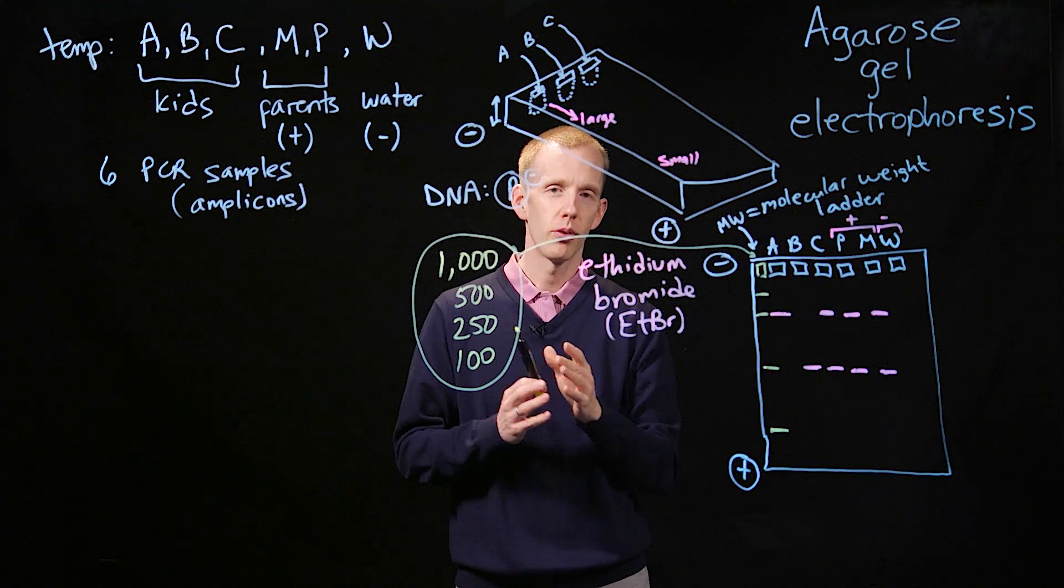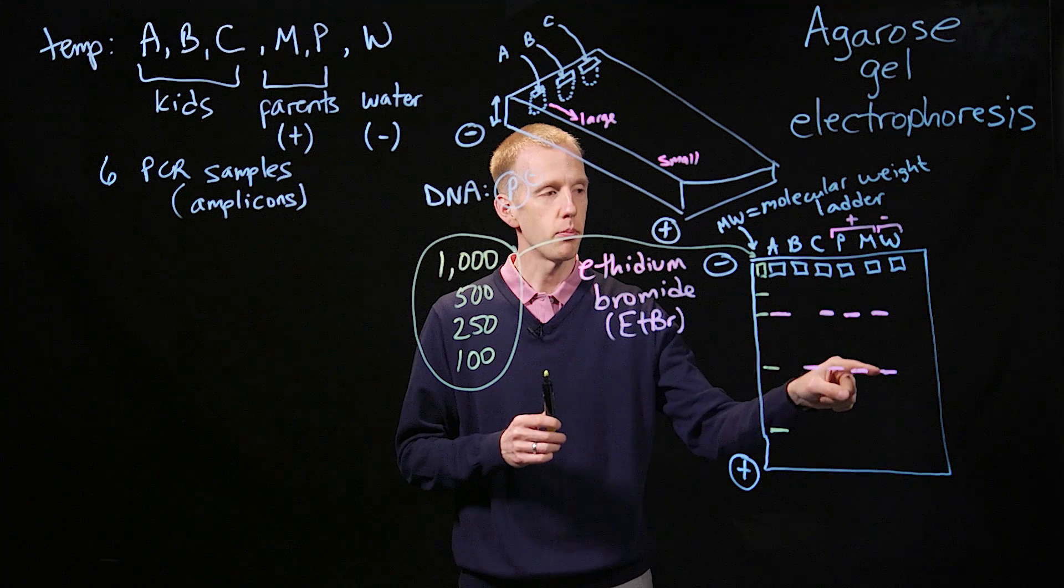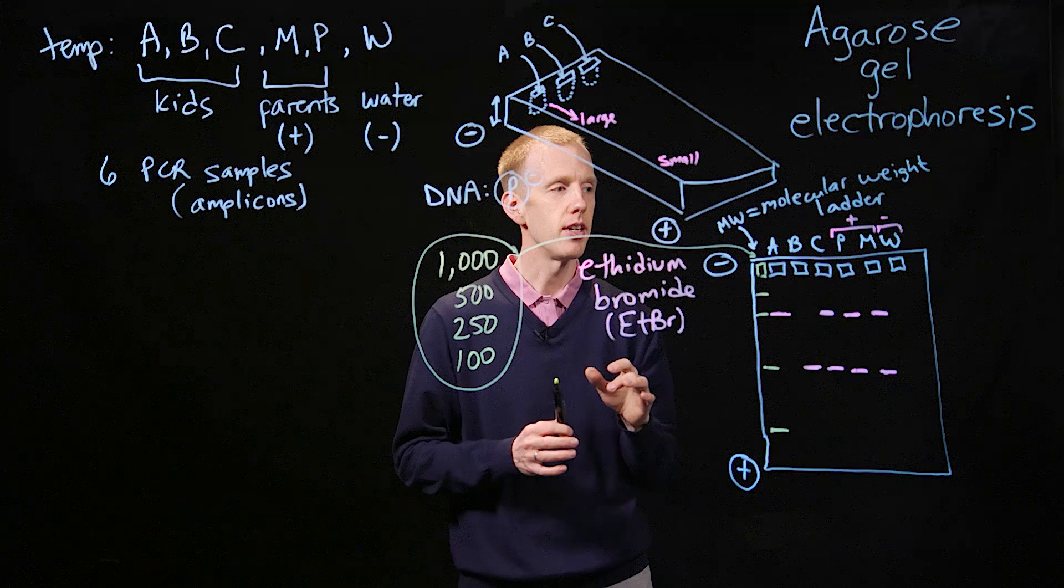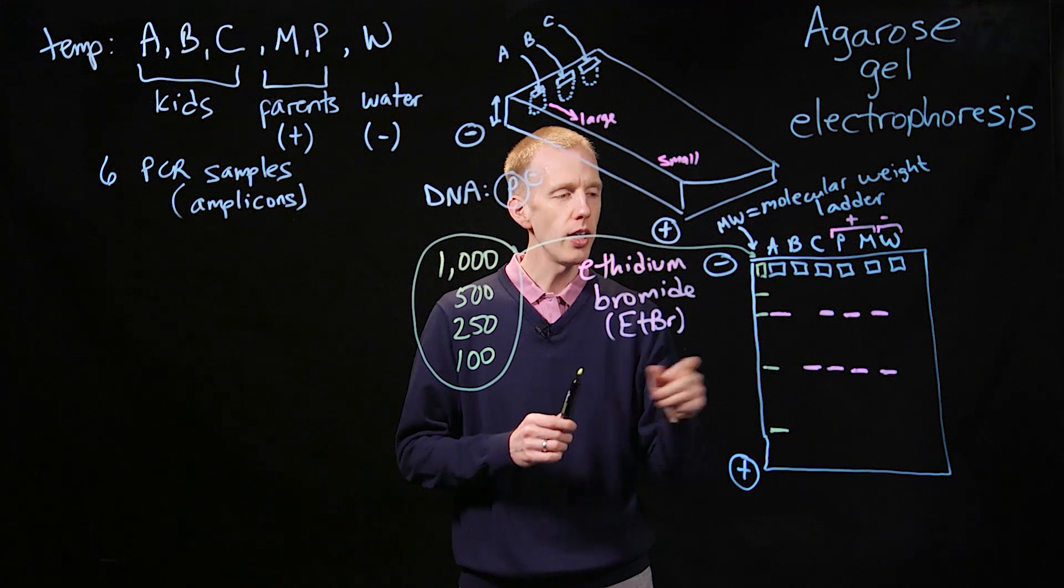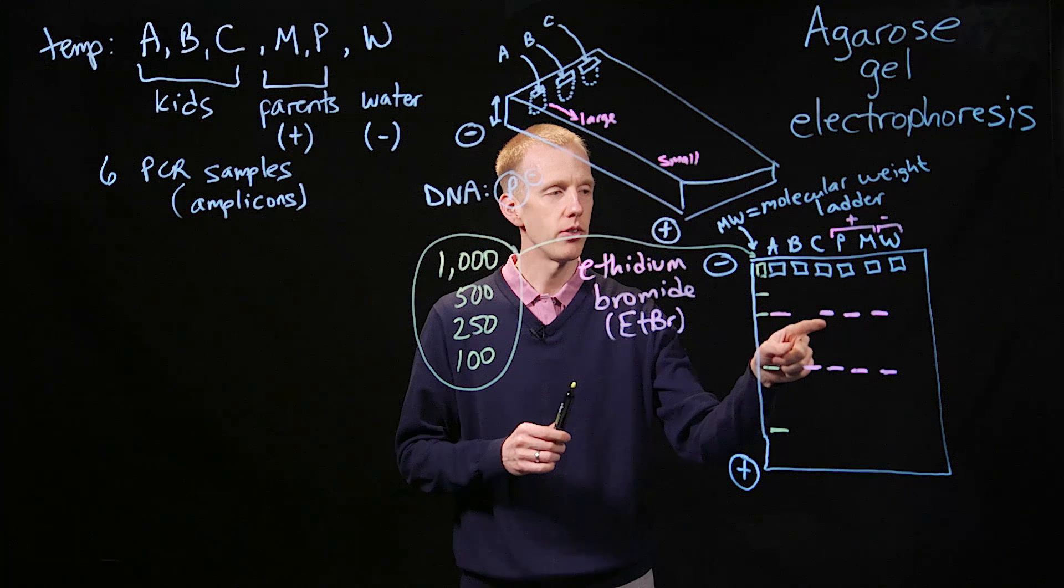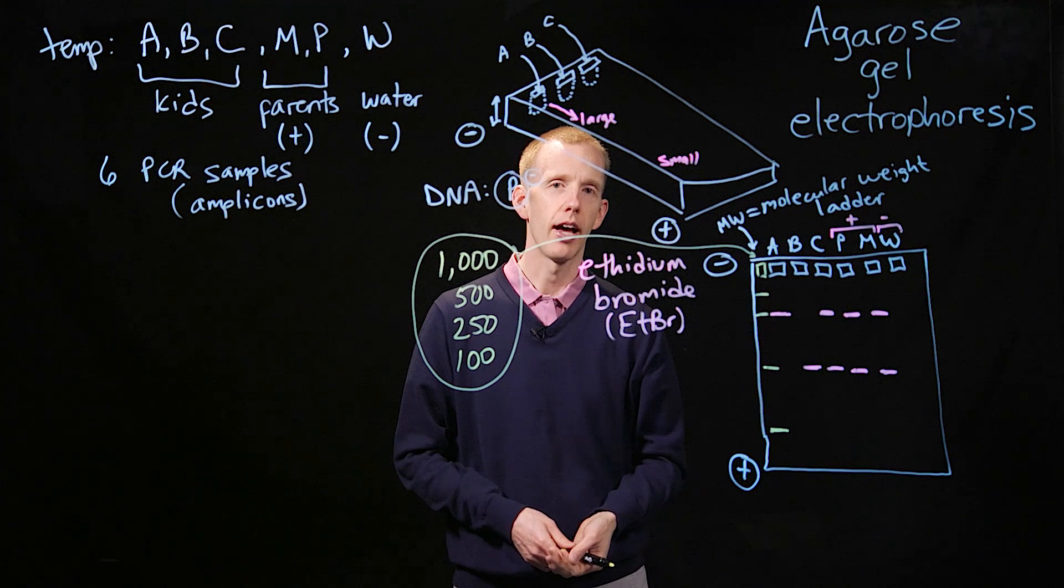So my question to you, two of them. First, what are the sizes of these bands from the samples A, B, C, and the paternal and the maternal sample? And also, why do we see different band patterns in the children than the parents? We'll talk about that in class.